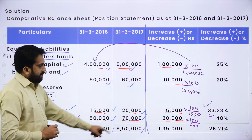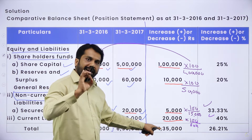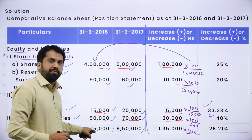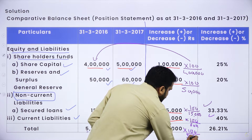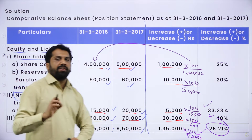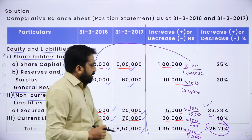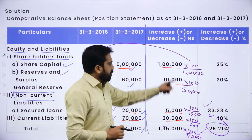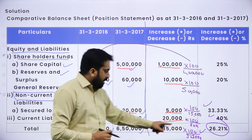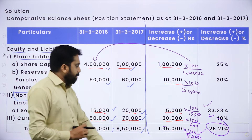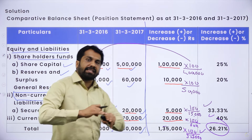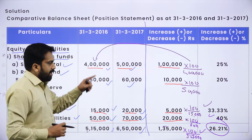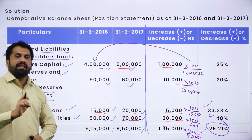For the total row: the total for 2016 is 5,15,000 and for 2017 is 6,50,000. The difference is 1,35,000. Multiply 1,35,000 by 100 and divide by the first column total of 5,15,000. Your answer is 26%. Note that the total percentage is not the sum of the individual percentages — you must calculate it separately using the same procedure.